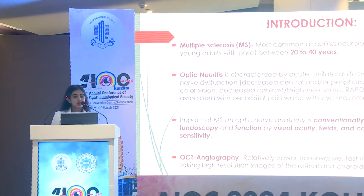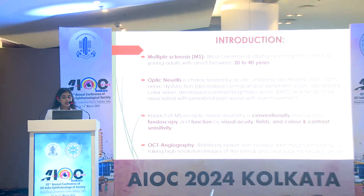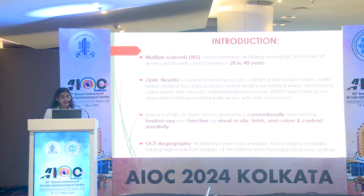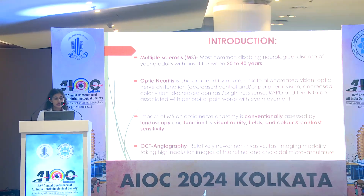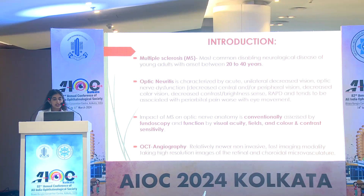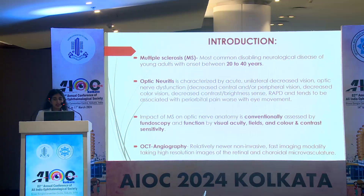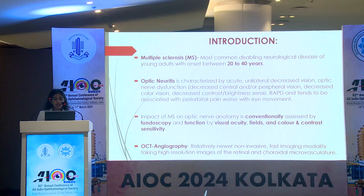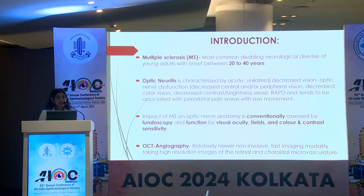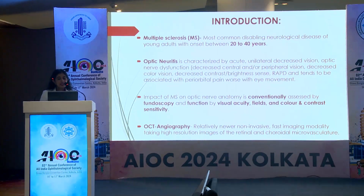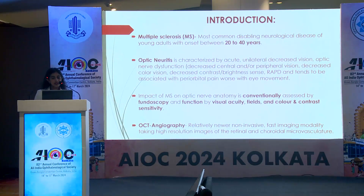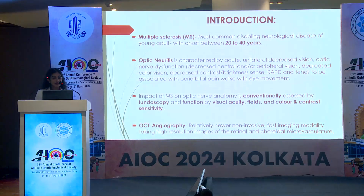As we all know, multiple sclerosis is the most common disabling neurological disorder of younger adults, occurring in the age group of 20 to 40 years. Optic neuritis, mainly retrobulbar neuritis, occurs in 80% of patients with multiple sclerosis, but very little is known regarding the retinal perfusion changes in them. The impact of multiple sclerosis on optic nerve anatomy is conventionally assessed by fundoscopy and function by visual acuity, fields, and colour and contrast sensitivity.